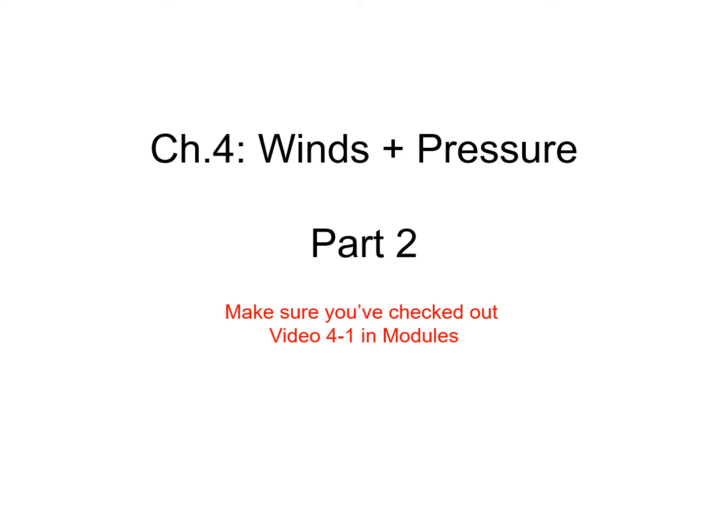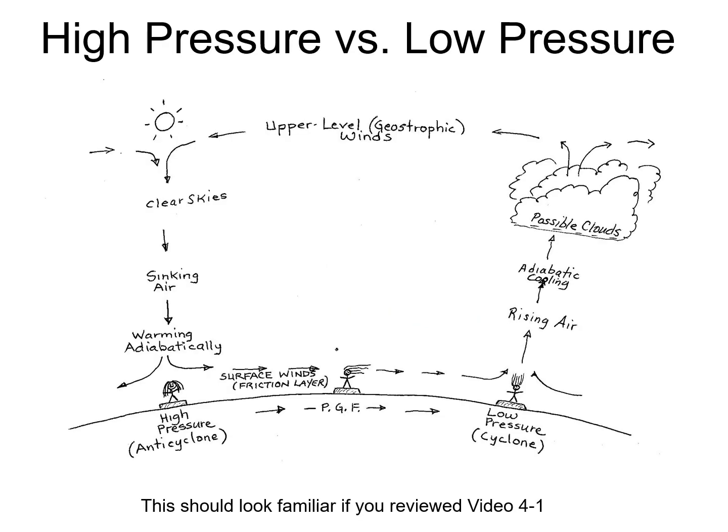Welcome back to winds and pressure part two. By now you should have checked out the video in modules which discusses the relationship between high pressure, low pressure, anti-cyclones, cyclones, friction layer winds, upper level winds, clouds, rainfall, sunny skies, adiabatic warming, and adiabatic cooling. You should have a model developed in your head very similar to what I drew out about the relationship between all those terms.